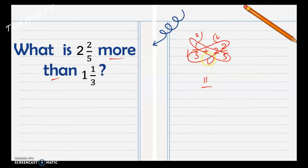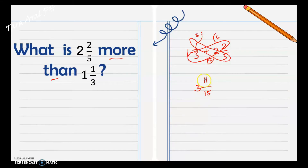Multiply the denominators: three times five equals fifteen, so our denominator is fifteen. Now we can add the whole numbers, which is one plus two equals three. For eleven fifteenths, there is no common factor other than one, so it cannot be simplified. Our final answer is three and eleven fifteenths.